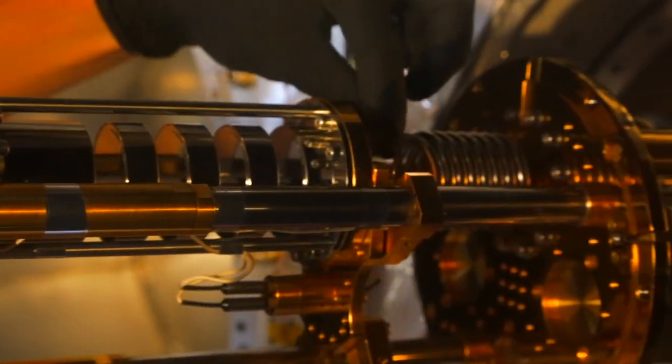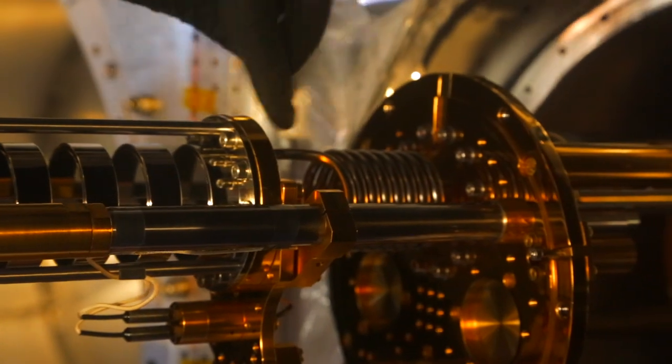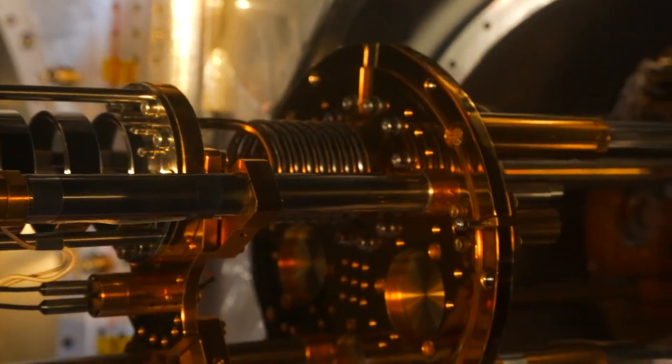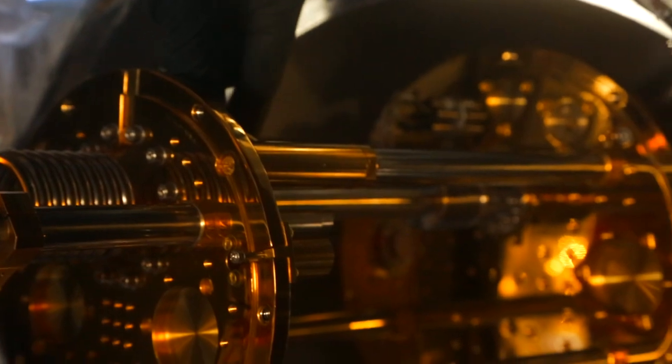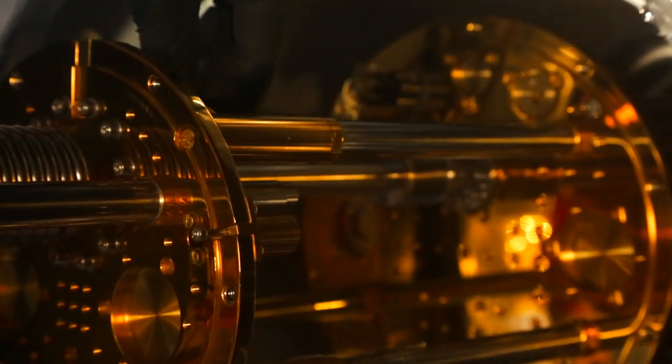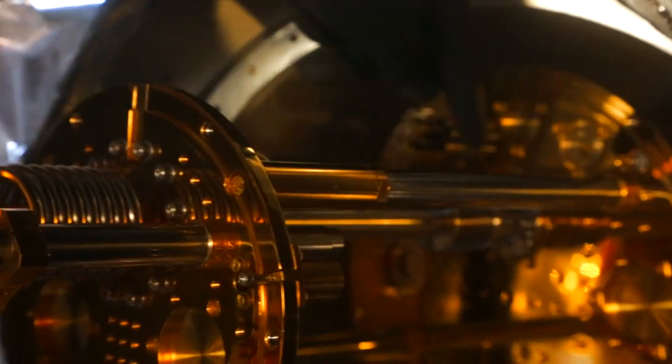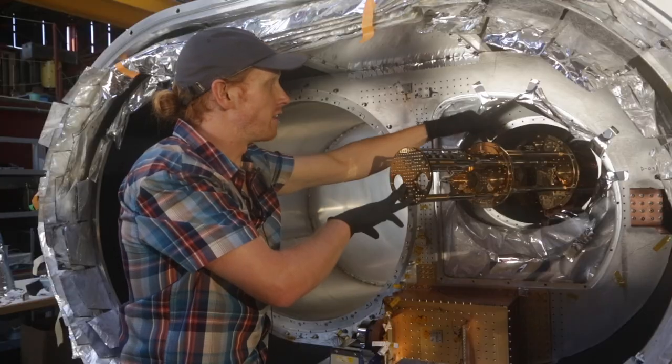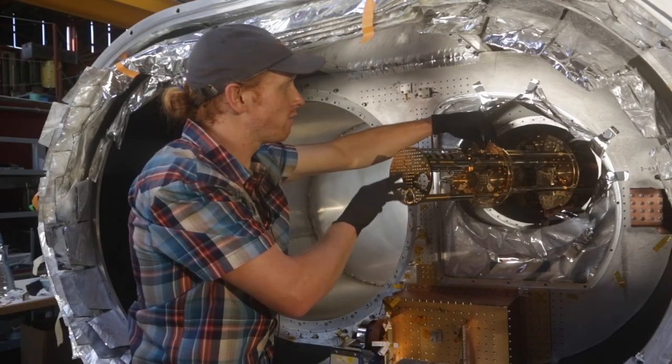Where my finger is pointing is a piece called the still. The still is where the helium boils off and is transported away out of the cryostat into the gas handling system, which recycles it. That cools this stage down to 1 kelvin.